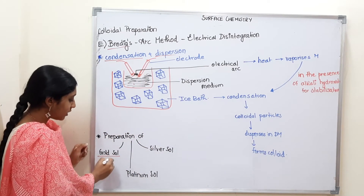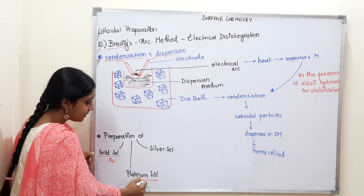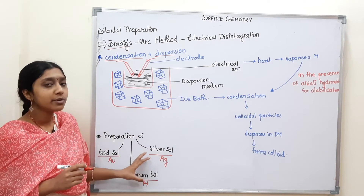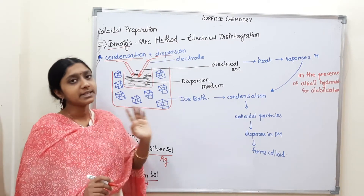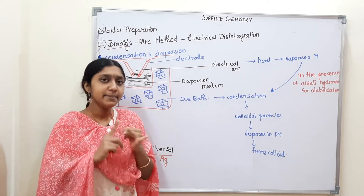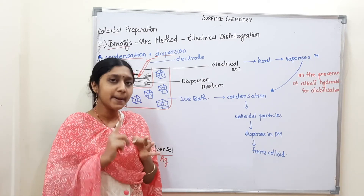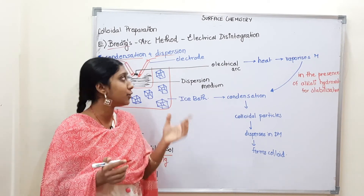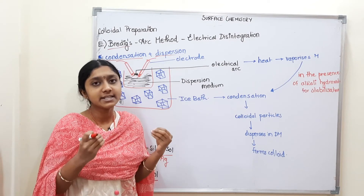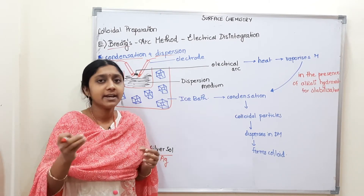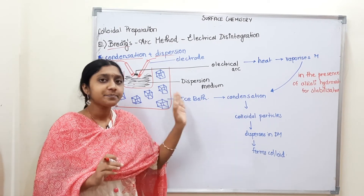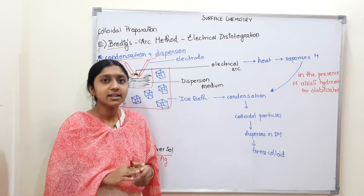The colloidal particles produced by this method include metals like Au (Gold), Pt (Platinum), and Ag (Silver). So the two main processes involved are: first the metal is vaporized (Dispersion), then the vapors undergo Condensation to form colloidal particles. This is Electrical Disintegration — the Bradic's Arc Method. With this, the preparation of colloids is complete.